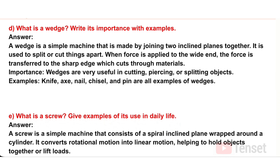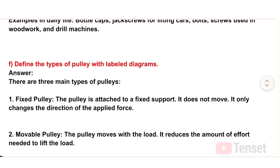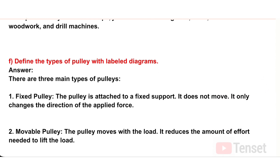E) What is a screw? Give examples of its use in daily life. Answer: A screw is a simple machine that consists of a spiral inclined plane wrapped around a cylinder. It converts rotational motion into linear motion, helping to hold objects together or lift loads. Examples: bottle caps, jack screws for lifting cars, bolts, screws used in woodwork, and drill machines.